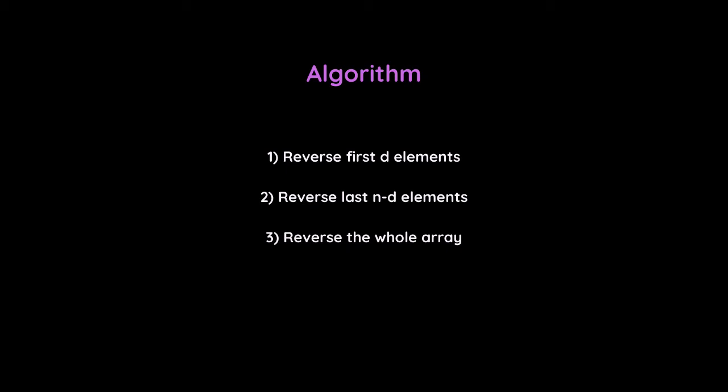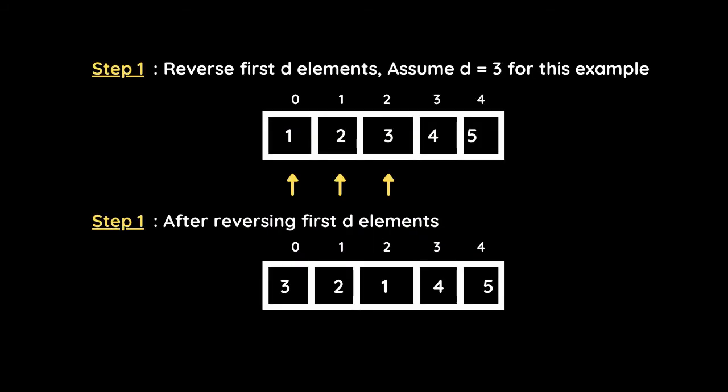Let's look at the algorithm to solve this problem. There are three steps to follow. The first step is to reverse the first d elements — if d is 3, reverse the first three elements only. The second step is to reverse the last n minus d elements — if n is 5 and d is 3, reverse the last two elements. The third step is to reverse the whole array.